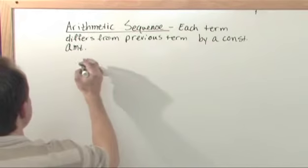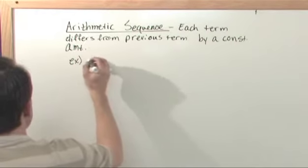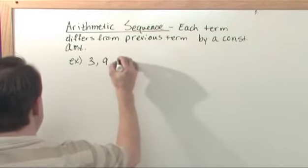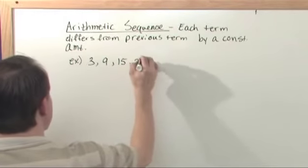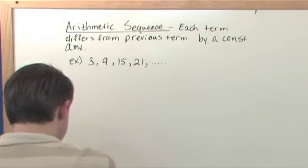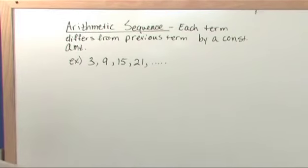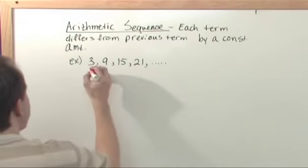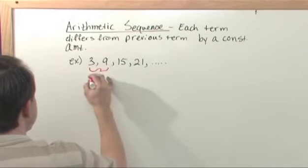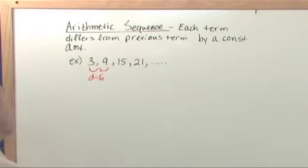So let's say I give you a sequence, and it looks like this: 3, 9, 15, 21, dot dot dot. Now let's look at this. What is the difference between 3 and 9? This difference, which I'm going to call d, is equal to 6. That's the difference. What is the difference between 9 and 15? This d is again 6.